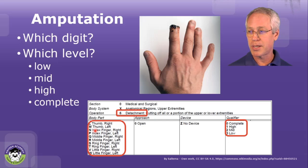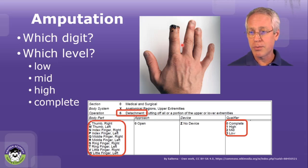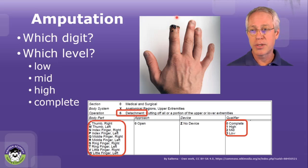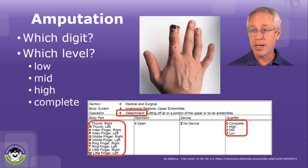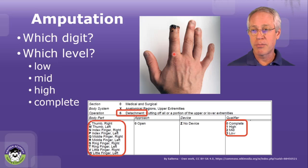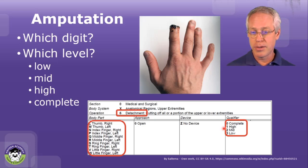The digits are right here in the body part value — that's not hard to get from the documentation. Then we just need to know which level: low, which is through the DIP joint or distally; mid, through the PIP joint or the middle phalanx; high, through the proximal phalanx; and complete, through the metacarpophalangeal joint. This will determine your qualifier accordingly.